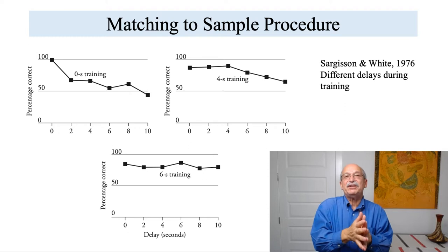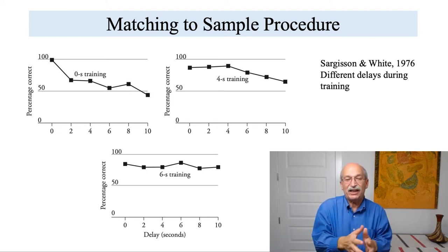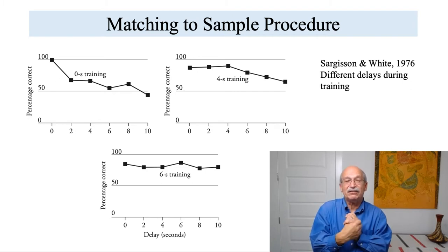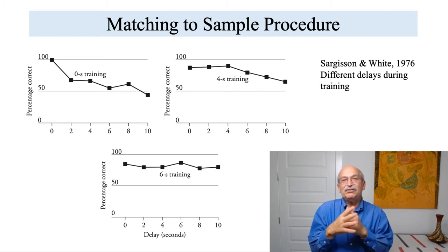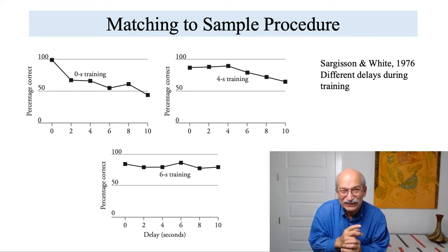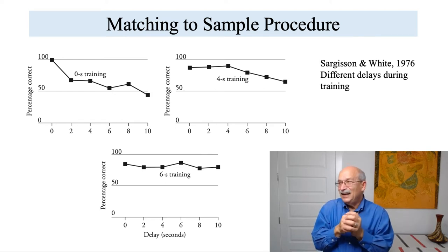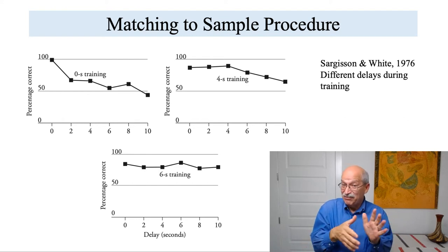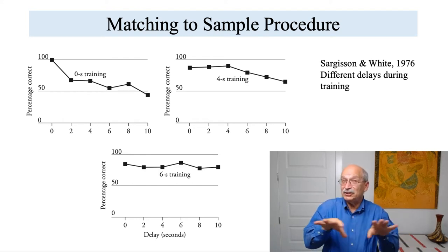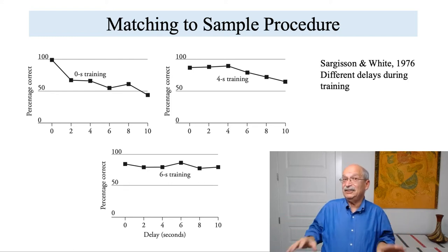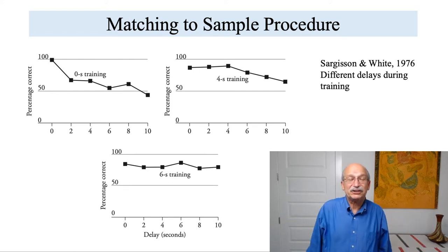If you look at the top left data for those birds, the training involved a zero interval between the sample and the choice stimulus during the training trials. And then when you tested them with various delays, you get the typical memory decay function like we saw in a previous graph. Check the next one over on the right. These guys were trained with a four second delay. And they don't show a standard decay function. In fact, the memory function is much more flat. And it's entirely flat in the bottom graph where the pigeons were trained with a six second sample to choice kind of interval.